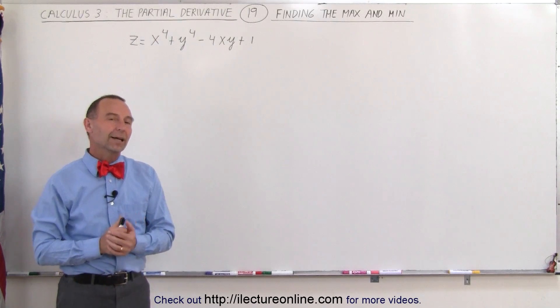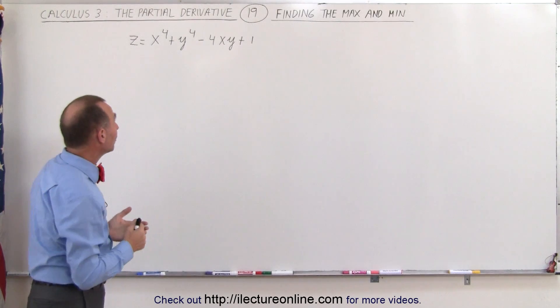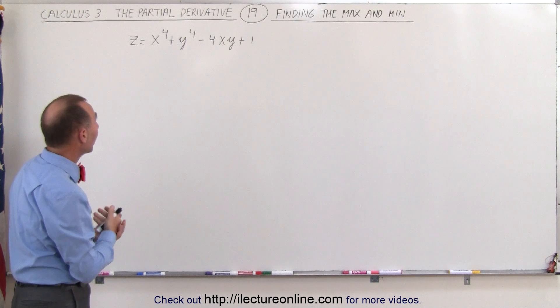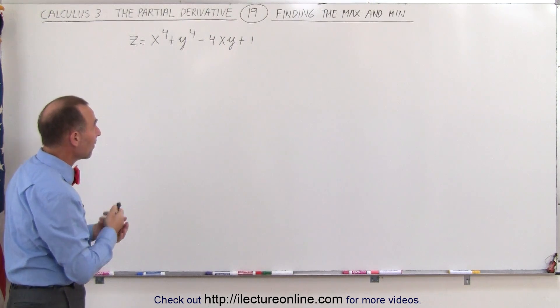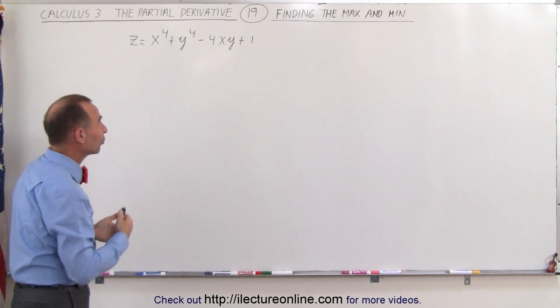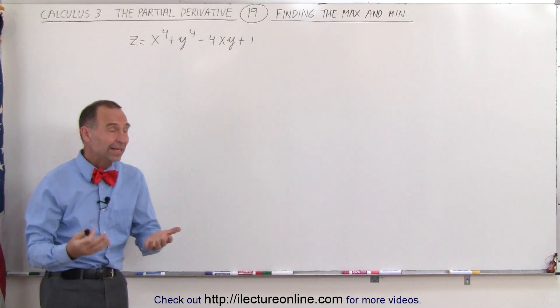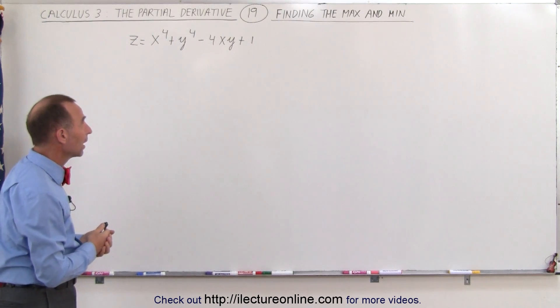Welcome to ElectronLine. Now let's take a look at this equation. Here we have z equals x to the 4th plus y to the 4th minus 4xy plus 1. Again, z is a function of x and y.